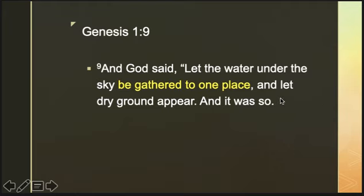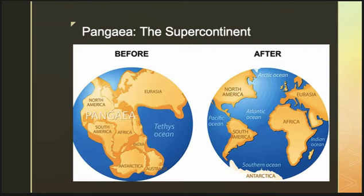It is interesting to note that the verse says the waters have been gathered in one place. When you gather the waters in one place, it means they are only located at one section, and therefore the land will appear only at the opposite location. This means the scattered land masses — the continents — may have had a different formation during the creation, because they had to appear as one location only.